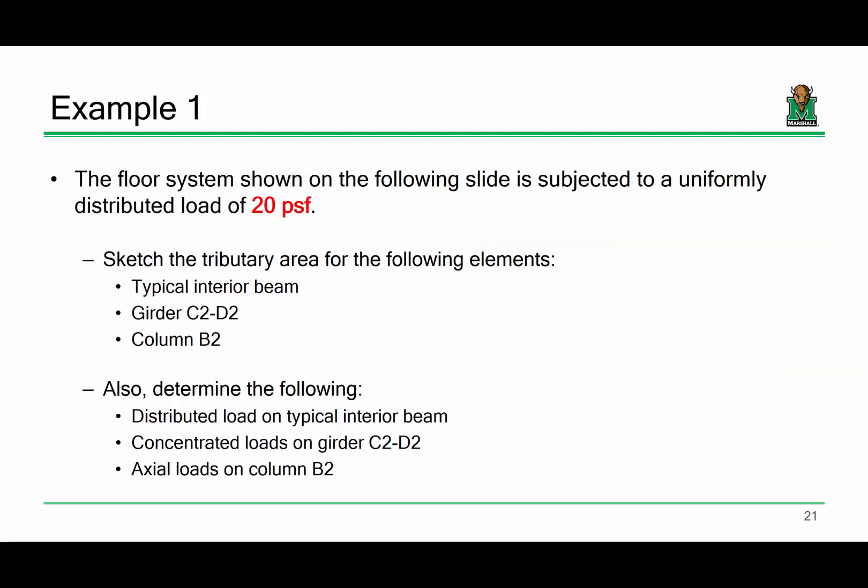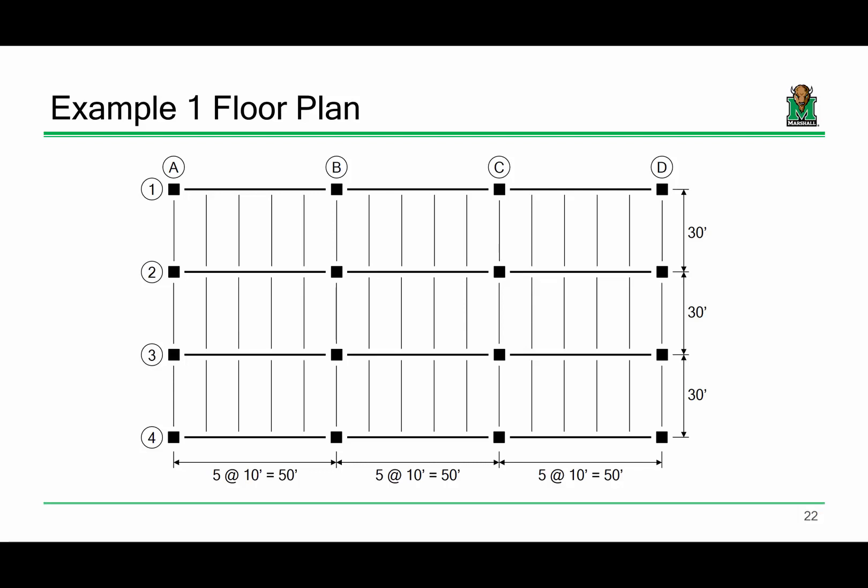Last time we did a full-blown example taking a representative floor system subjected to a 20 PSF pressure load and doing what's called a load takedown — taking that 20 pounds per square foot and breaking it down into shears and moments on a beam, and axial loads on a column. For instance, a beam with a tributary width of 10 feet would translate that 20 PSF into a 200 pounds per foot uniformly distributed load, giving you reactions, shear diagram, and moment diagram.